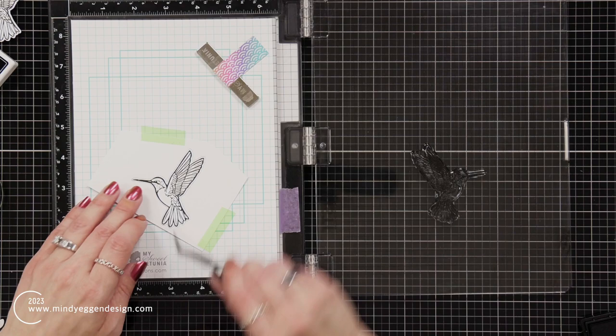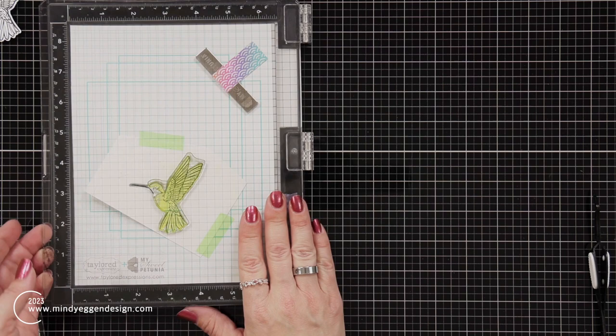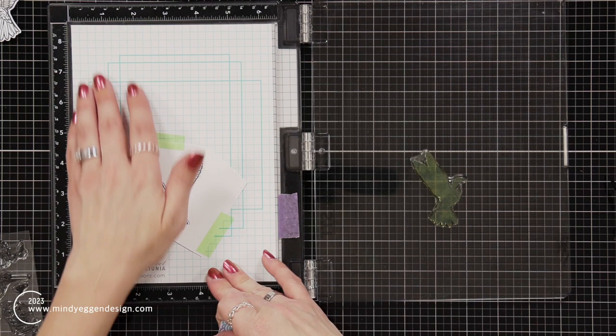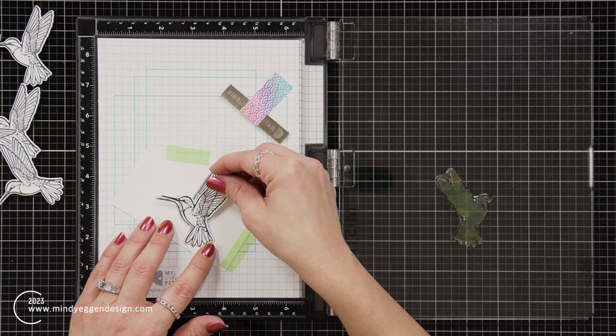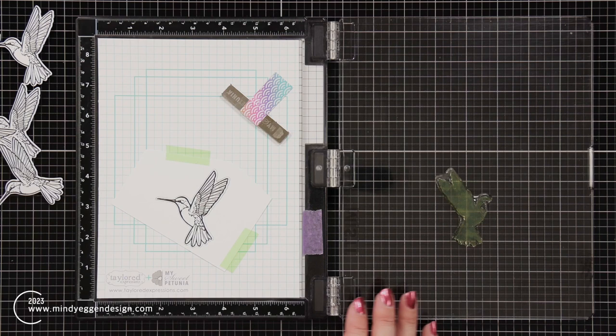Once all my outlines are done, I'm taking the first layer of the color layering hummingbird. I lined that up over the stamped image in my MISTI and picked it up with the door. For some of these hummingbirds, I wanted to make sure the black ink was completely dry, so I went over that with a heat tool. Then I could pop that in to that negative piece.